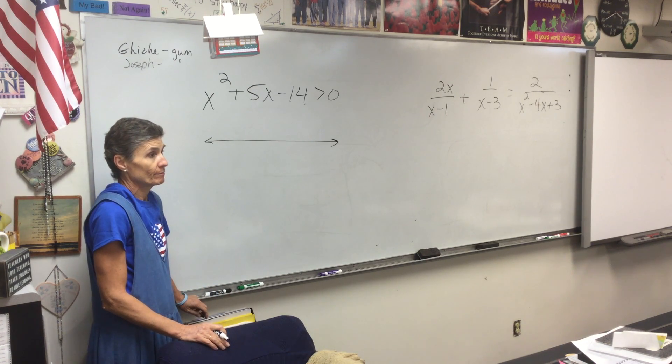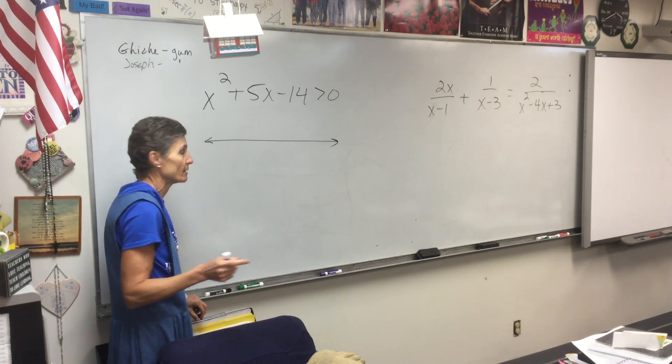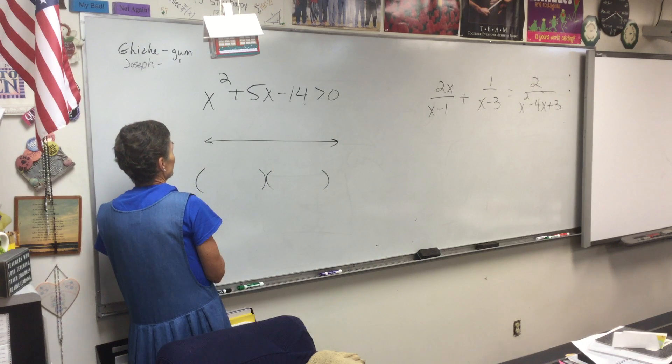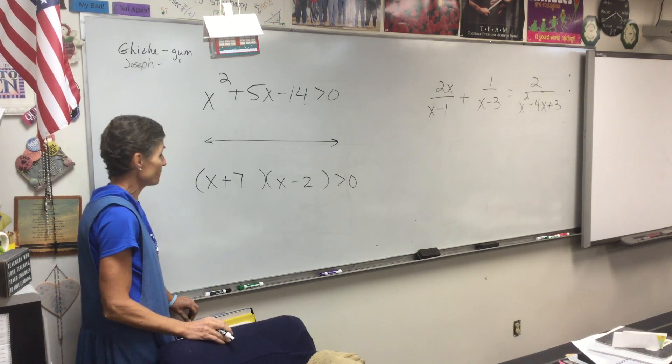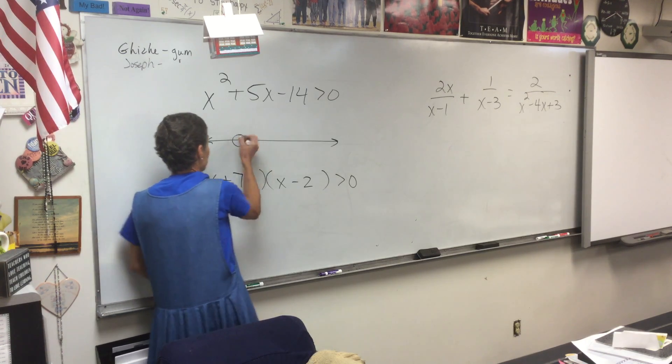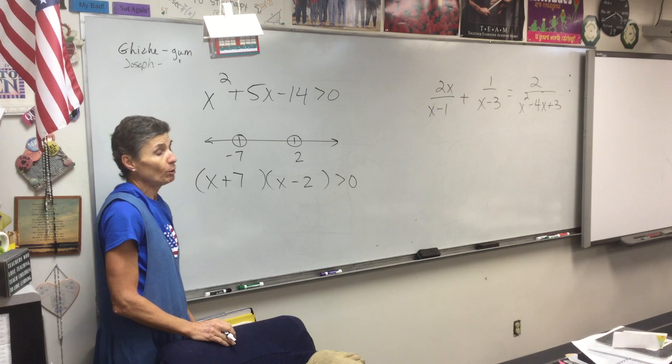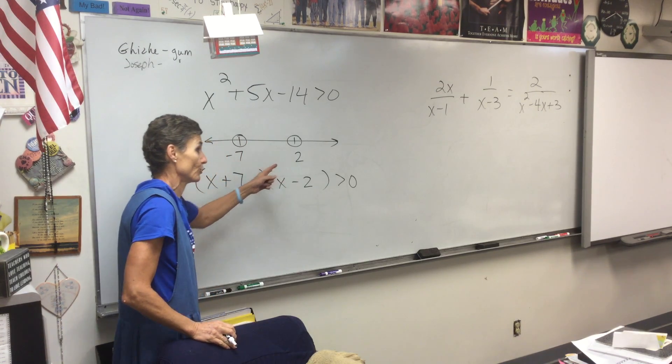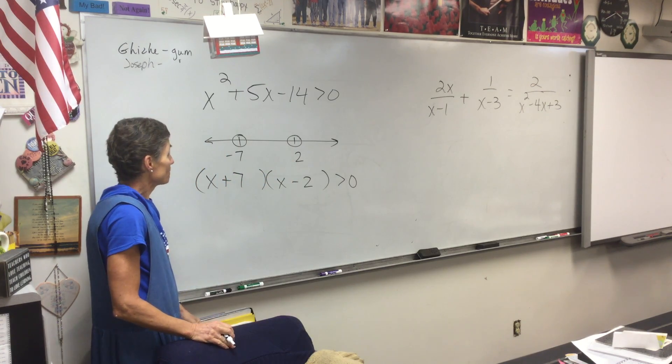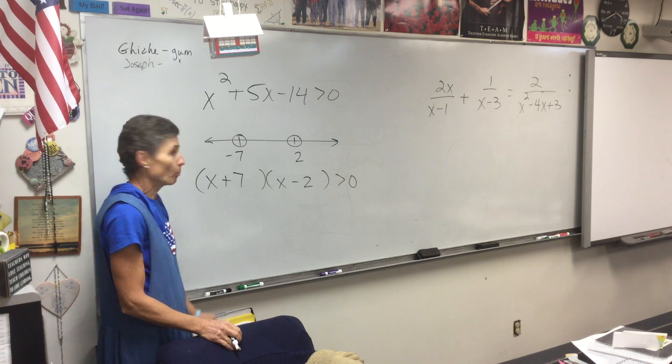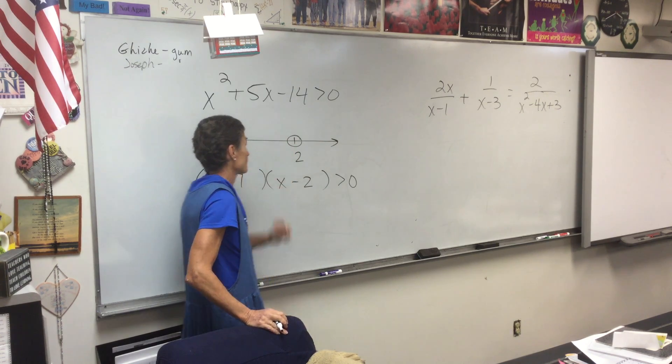What do I do to get that problem started? I factor it. Just like I did yesterday's quiz and just like I do every problem I look at. If it factors, I factor it. So how does this one factor? X plus 7, x minus 2. Two dots go on the number line. Where will those two dots go? At negative 7 and positive 2. Make sure you have them in the right order. Will those dots be open dots or closed dots? Open dots.